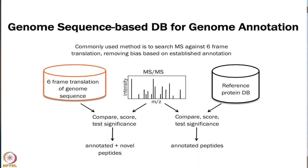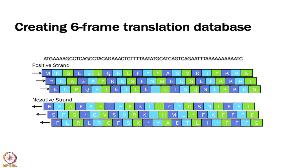We have our reference database, or whatever we have available. If there are databases for understudied organisms they may be incomplete. You can do a whole genome sequence of whatever organism you want and then do a six-frame translation. You do positive strand three-frame translations starting from ATG, going to TGA, doing every frame, then going in the negative direction for the other three frames. Then you have six frames and can use this to supplement your reference database.